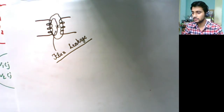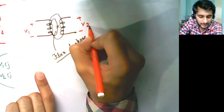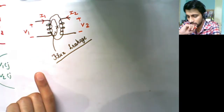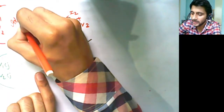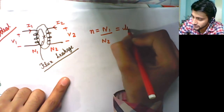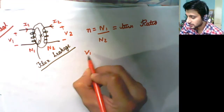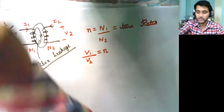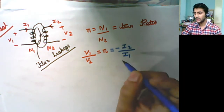In an ideal transformer, you have voltage V1, current I1, voltage V2, current I2. The turn ratio, small n, is given by N1 upon N2, where N1 is the number of turns in coil 1 and N2 in coil 2. The voltage ratio V1/V2 depends only on the turn ratio. The current relationship also depends on the turn ratio, with a negative sign due to the opposite direction convention.